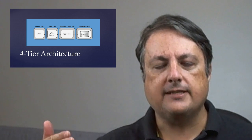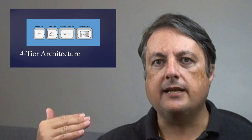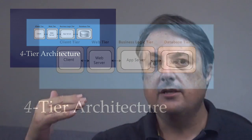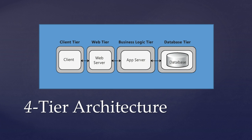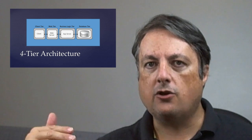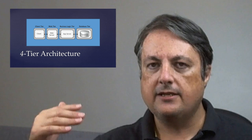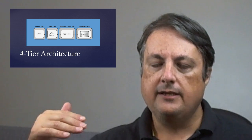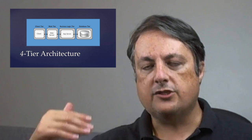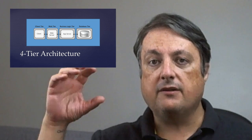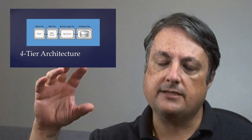I've worked in companies that split their business tier into two separate tiers. You have the business layer, and then you have a data access layer written in code. Microsoft does have an Enterprise Library that comes with a data access block, but you can write code that simply interfaces with the database — you call a method, it does one thing and returns the results to the caller, while the business layer contains the business logic.